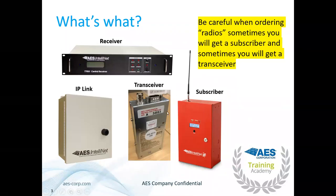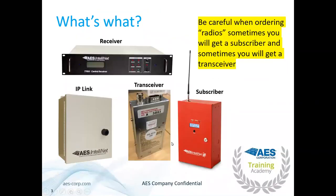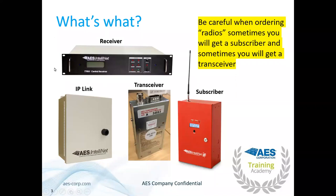Here's a brief highlight of the AES radio technology. We have our subscriber here — this is what most people call the radio. Signals will hop between subscriber and subscriber until they get back to the IP link. What the IP link does is change the radio data into IP data and send it along to the receiver, which is located at the dispatch center and monitored by the alarm automation software.